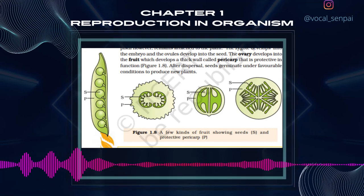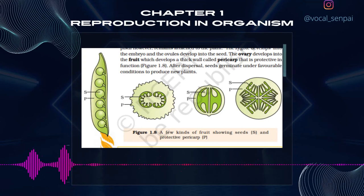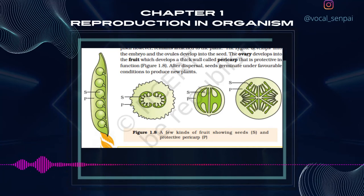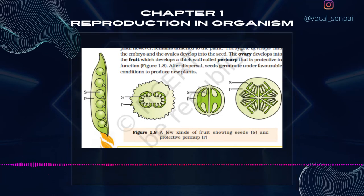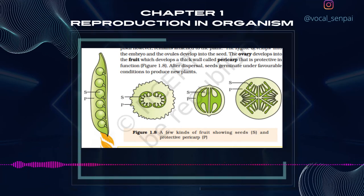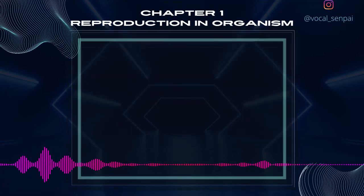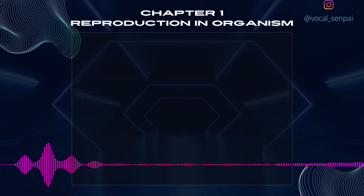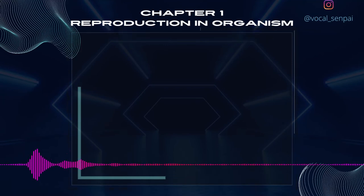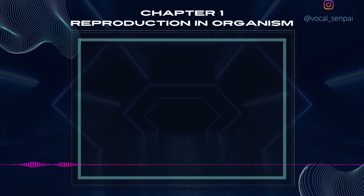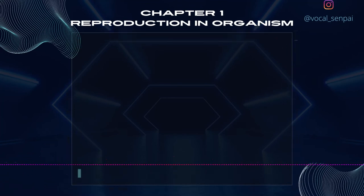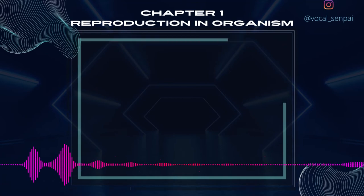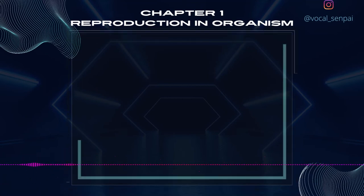In flowering plants, the zygote is formed inside the ovule. After fertilization, the sepals, petals and stamens of the flower wither and fall off. The pistil, however, remains attached to the plant. The zygote develops into the embryo and the ovules develop into the seed. The ovary develops into the fruit, which develops a thick wall called pericarp that is protective in function, figure 1.8. After dispersal, seeds germinate under favorable conditions to produce new plants.